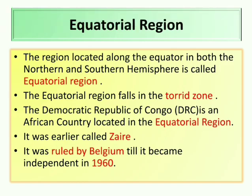The region located along the equator, in both the northern and southern hemispheres, is called the equatorial region. The equatorial region lies on both sides of the equator and falls in the torrid zone. The Democratic Republic of Congo is an African country located in the equatorial region.